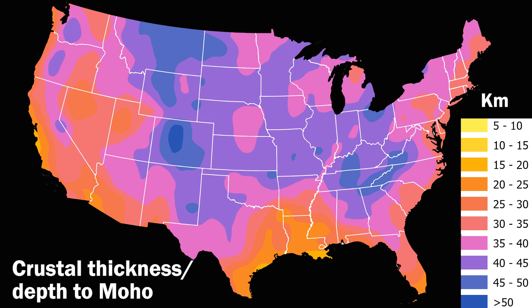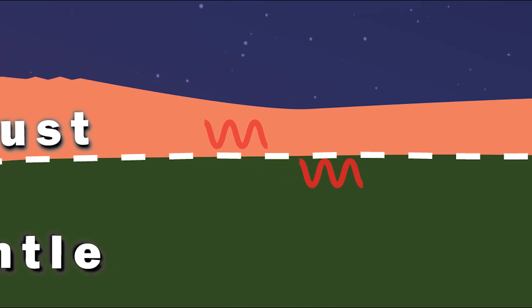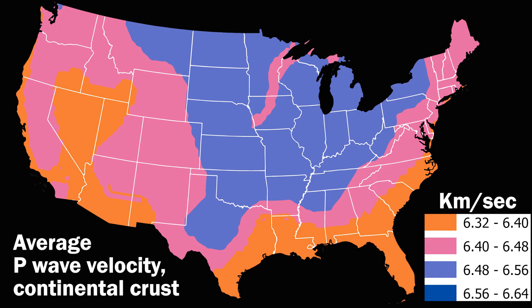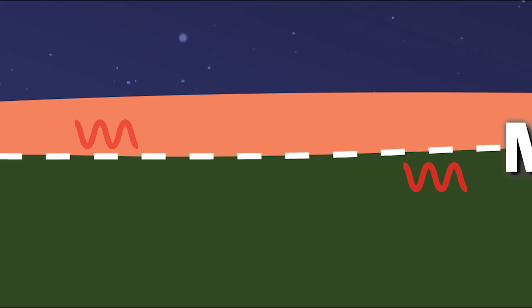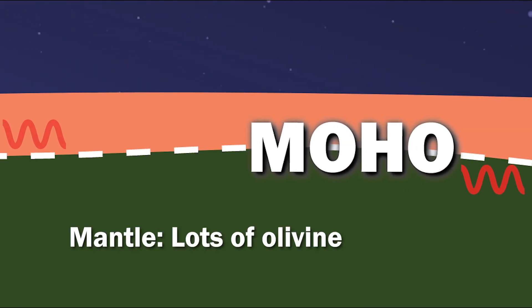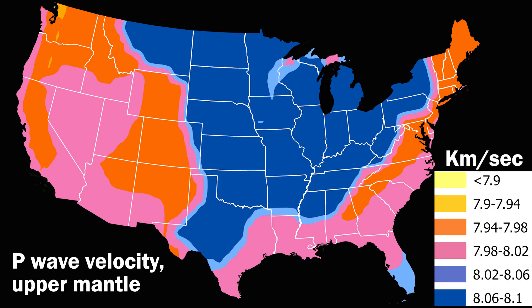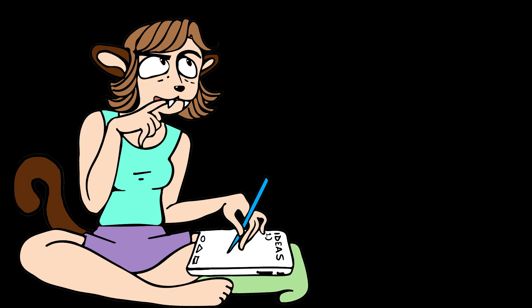This map shows the thickness of U.S. continental crust. Excluding the sedimentary rocks on top, U.S. continental crust averages about 40 kilometers thick, but thickens and thins in some places. Seismic velocities tell us about the composition of U.S. continental crust. This map shows the average seismic velocity of U.S. continental crust. Seismic waves move faster in olivine-rich mantle rocks than in continental crust rocks rich in feldspar and quartz. This map shows the seismic velocity of the upper mantle just beneath the U.S. MOHO.